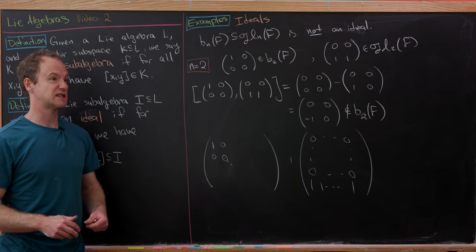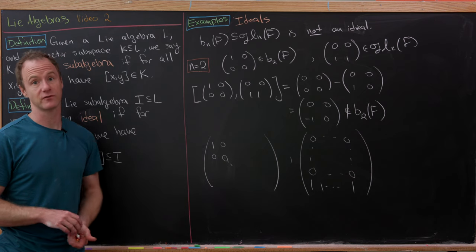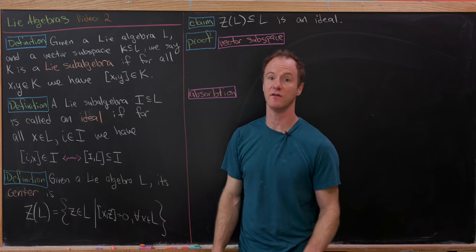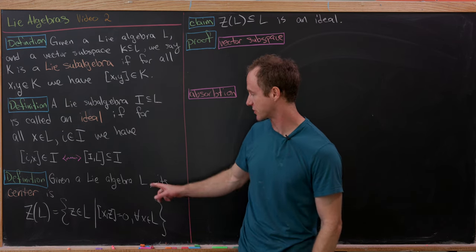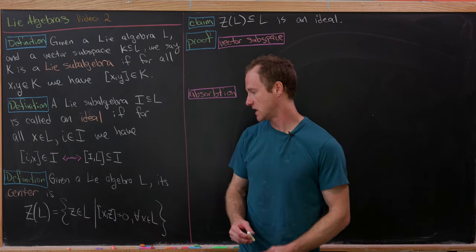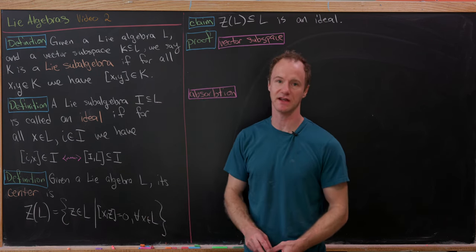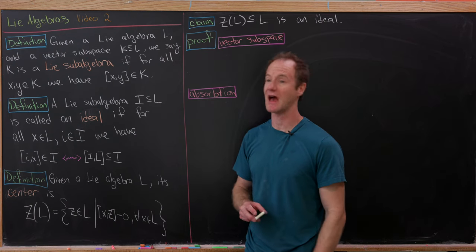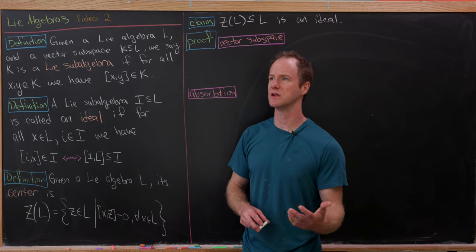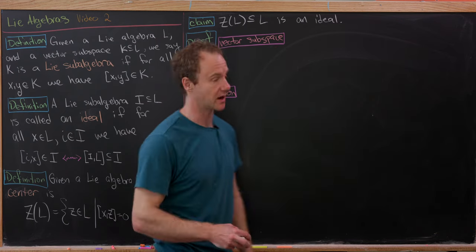Next up we want to look at a special subset of any Lie algebra known as the center. Given a Lie algebra L, the center Z(L) is defined as all z in L such that [x,z] equals 0 for all x in L — something that commutes with every element. This is in parallel to the center of a group or the center of a ring.